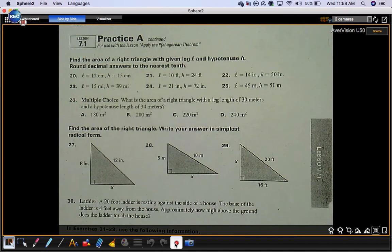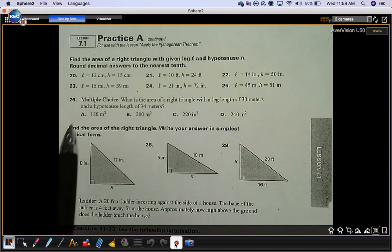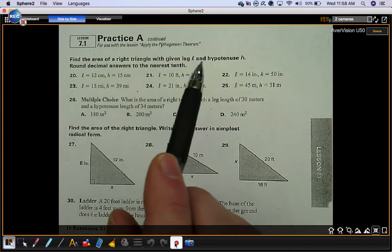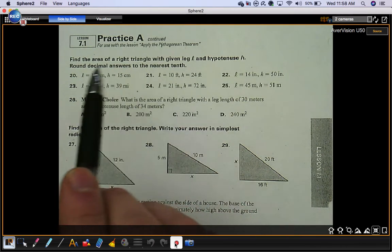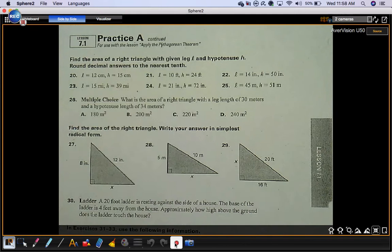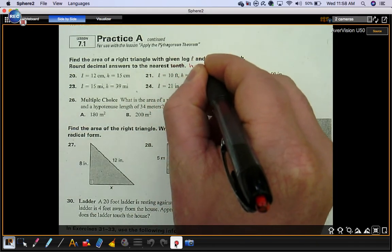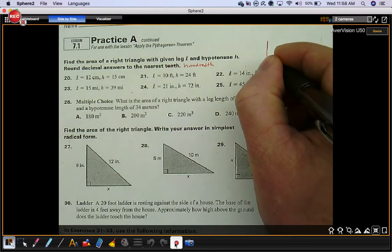Practice A for section 7-1. We're going to look at numbers 20 through 26, finding the area of a right triangle with a given leg and hypotenuse. They're telling you what the leg and hypotenuse are. Round your decimal answers to the nearest tenth. I always do hundredth.